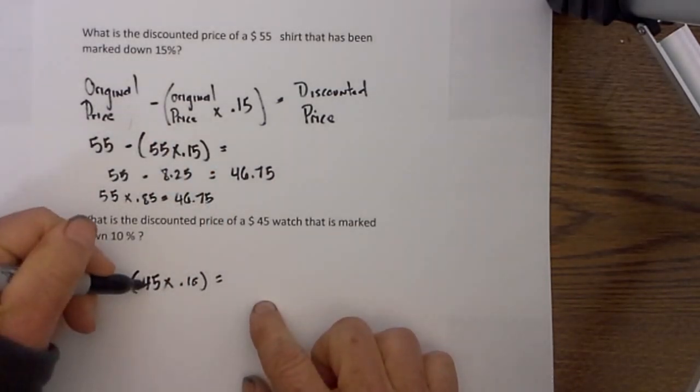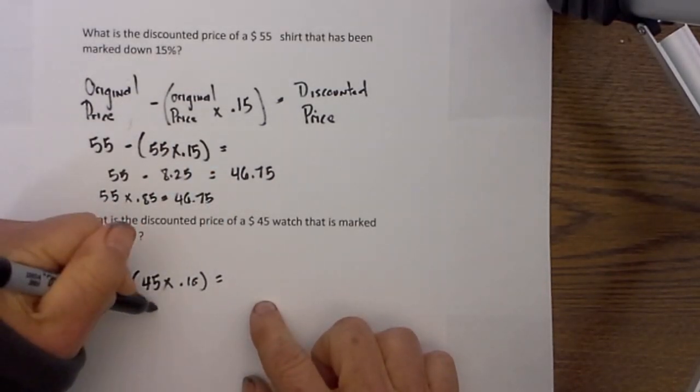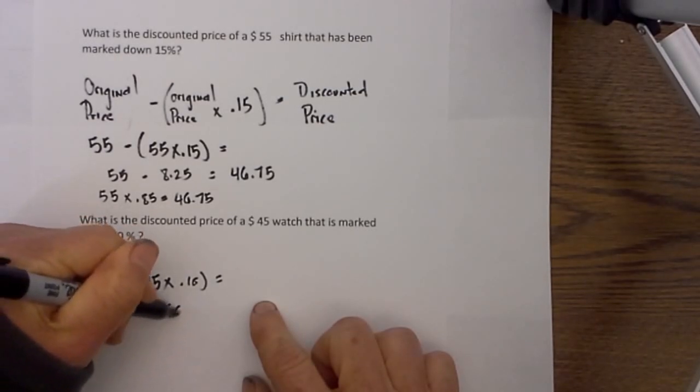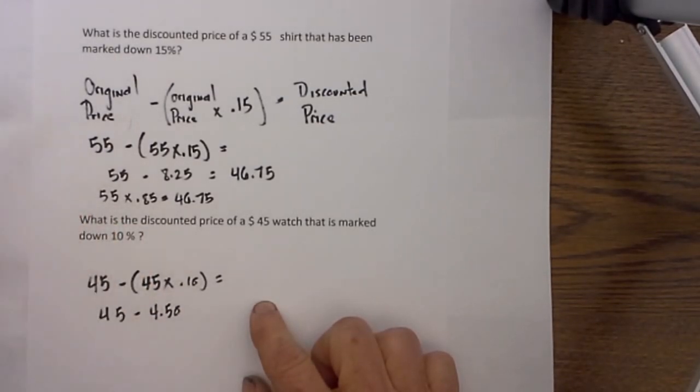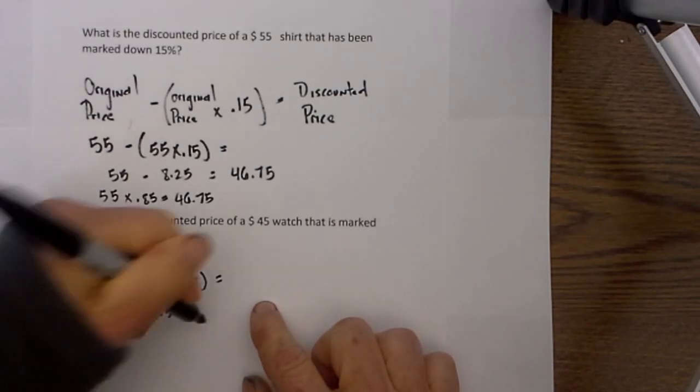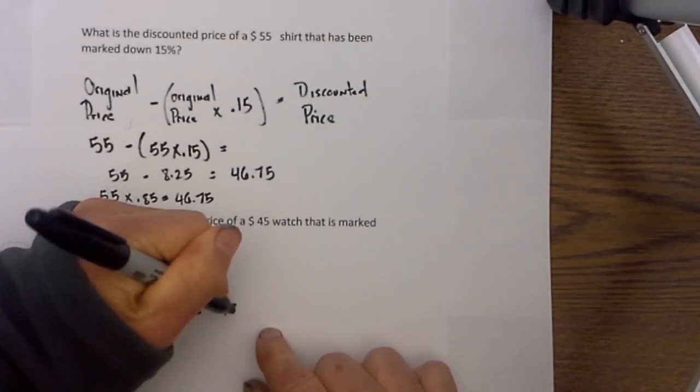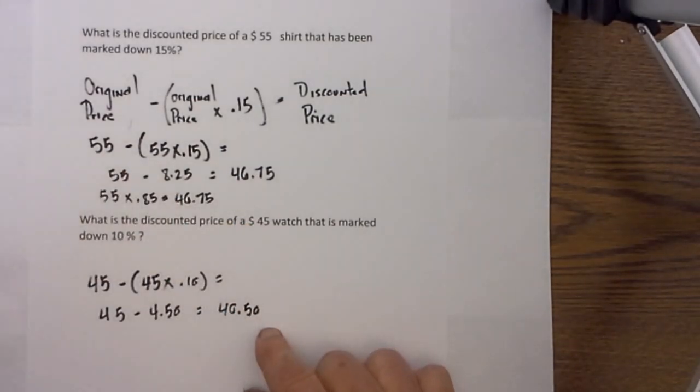So then I know 45 times 10% is 4.50, so we have 45 minus 4.50 which is equal to $40.50.